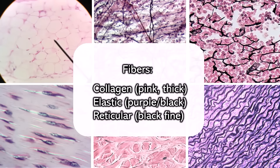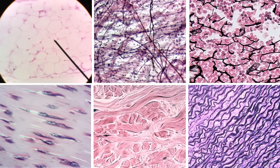Looking at the first one — that's the easiest that everyone learns very quickly — that is adipose. You don't have to worry about the fiber types; it's just a bunch of fat cells. Each one of these bubbles is a singular fat cell, filled on the inside with a drop of fat. The biggest problem people have with adipose is that people will see simple squamous and think that it's adipose.